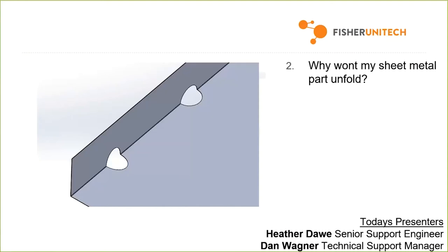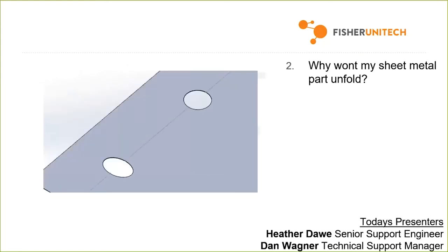I'm going to use this specific example to show you a really great command in sheet metal that is still forgotten, and in many tech support cases is a great solution. It's called the unfold and fold command. In this example, we're seeing a bent piece of sheet metal with a couple of holes in it — one is oblong and the other is more circular shaped. You can imagine if the part was flattened.